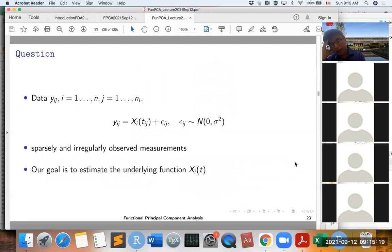So here is the question. Basically, we have some noisy observations, discrete observations Y_IJ for the curve X_IT. I is the index for the subject, J is the index for the time points. We assume that the data are sparsely and irregularly observed measurements. Our goal is to estimate the underlying function X_IT.